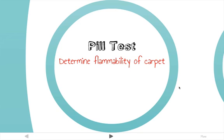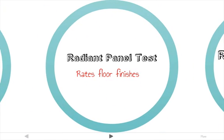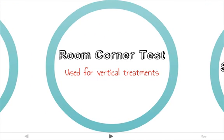First is the pill test, which is used to determine the flammability of carpet. There's the radiant panel test, which rates floor finishes including carpeting, resilient flooring, and hardwood floor assemblies. And the room corner test, which is used for vertical treatments like curtains, draperies, window shades, large wall hangings or tapestries — any sort of vertical treatment that's going to be exposed to air on both sides.